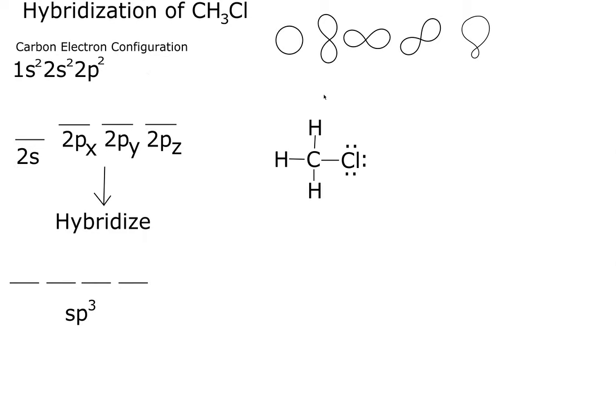Now, when we decide what the hybridization of our central element here, it's carbon, we can do a shortcut by simply counting the number of bonds, which we have one, two, three, four, or we count the number of lone pairs, and we have zero here, so we could automatically say it's sp3.